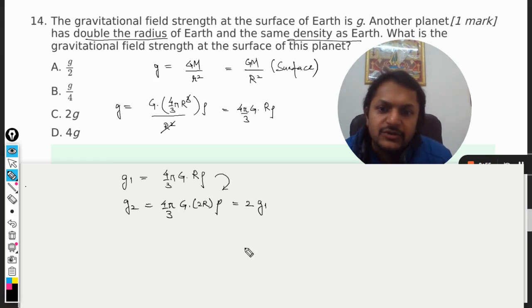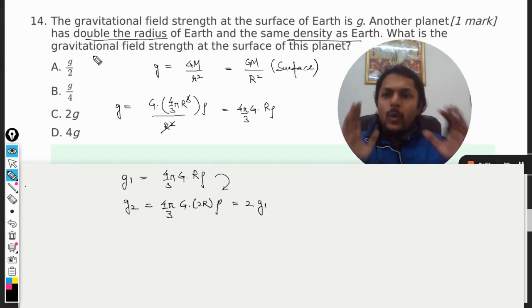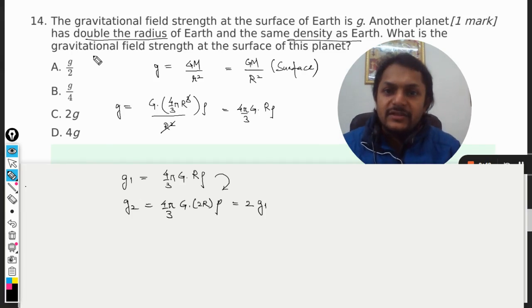So what it wants you to find is what is the gravitational field strength at the surface of this planet? So the surface of this planet will be C, that is 2g.